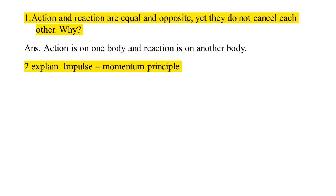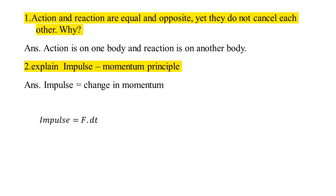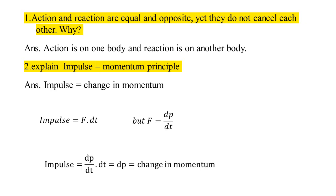Explain the impulse-momentum principle. Impulse is equal to change in momentum — that is the impulse-momentum principle. Impulse equals force multiplied by time (F·dt). Since F = dp/dt, we have F·dt = dp. Therefore, impulse equals change in momentum.